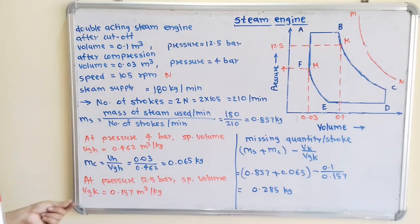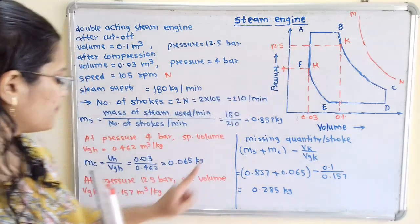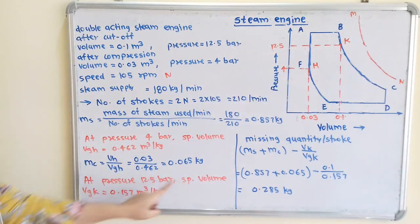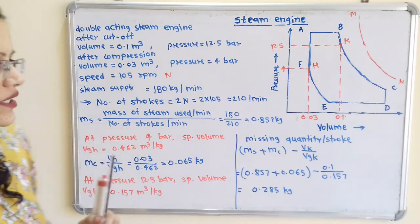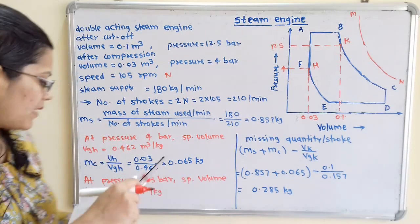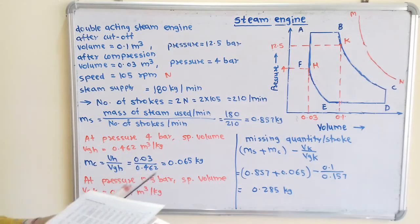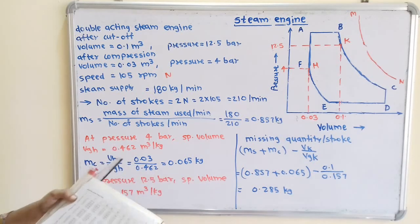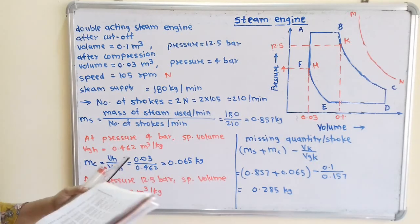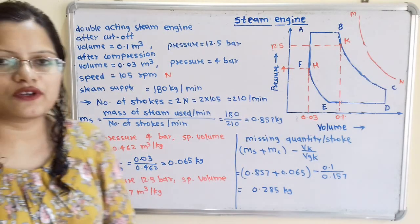Now at pressure 12.5 bar, we calculate the specific volume vgk for point K. Using the pressure table from the steam table at 12.5 bar, vg equals 0.157 m³/kg.